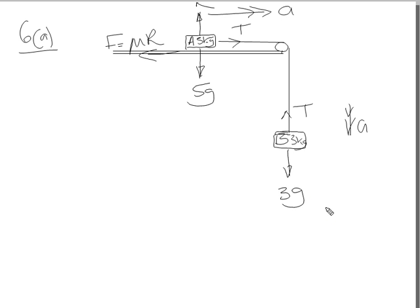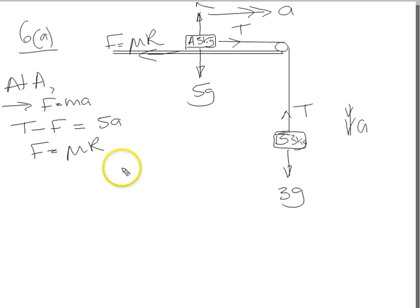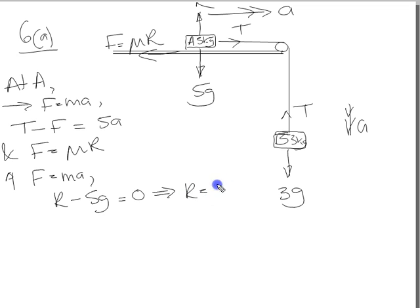So let's have a look at the system then. Let's have a look at f equals ma. So at A, apply f equals ma, then across this direction. Tension minus f, which is mu r, is equal to mass times acceleration. So 5a. And f equals mu r, of course. And vertically, we've got f equals ma. And then we've got r minus 5g equals 0. So r equals 5g.